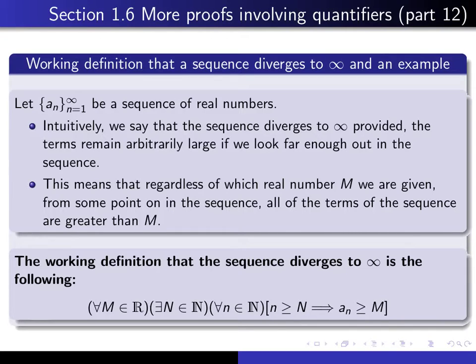And so that's expressed in a precise way by means of this working definition. It says that for every real number capital M, there exists a natural number big N, such that for all natural numbers little n, if little n is bigger than or equal to capital N, then a sub n is bigger than or equal to capital M.